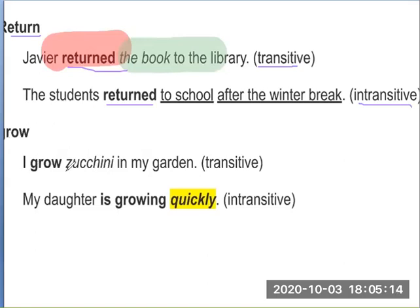Similarly, 'grow': I grow sushi in my garden — transitive. My daughter is growing quickly — intransitive. 'Grow' can come in both transitive and intransitive verb forms.